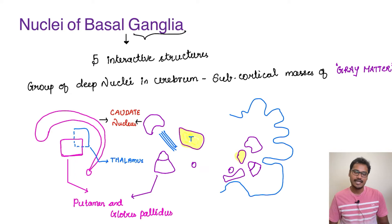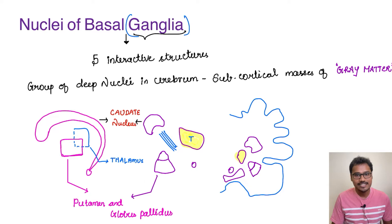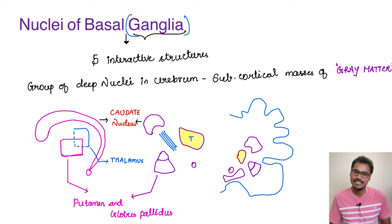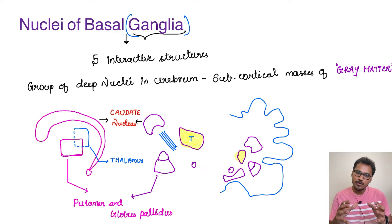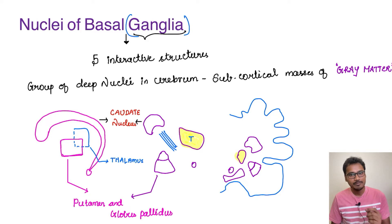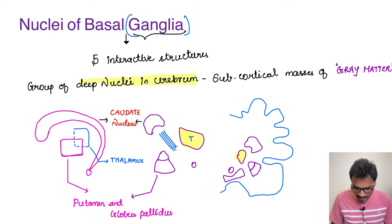So, what is basal ganglia? The term 'ganglia' is a misnomer here, because ganglia refers to a group of cell bodies located outside the central nervous system. But basal ganglia is located inside the CNS, so the ideal term should have been 'basal nuclei.' Basal ganglia is made up of a group of five interactive structures which are coordinated and function together to give a final output — deep nuclei located in the cerebrum, also called subcortical masses of gray matter.